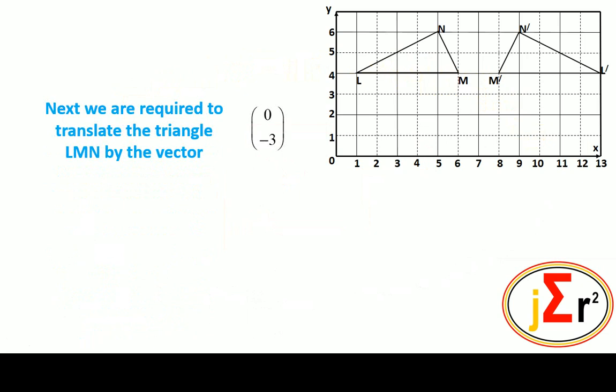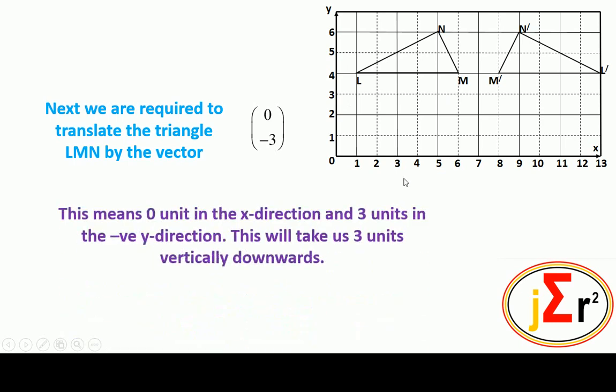We are required to translate the triangle LMN by the vector (0, -3). The vector that we have here is a vector of translation and it will be used to translate the triangle. We will translate the triangle vertex by vertex.